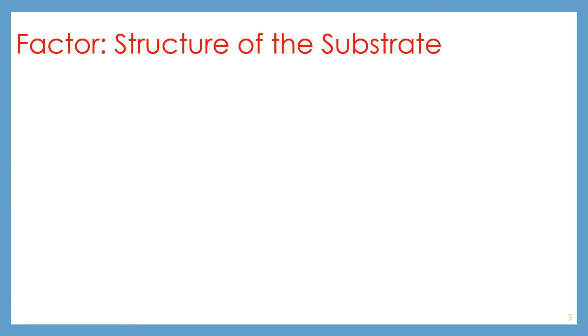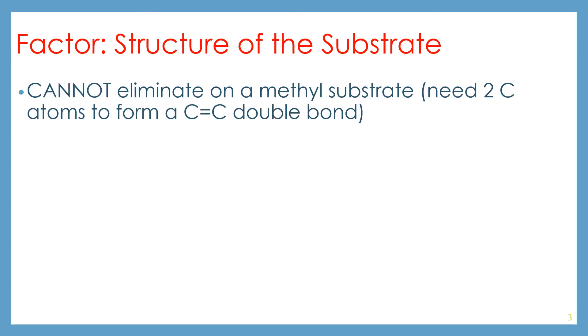So let's take a look at the first factor, structure of the substrate. You cannot eliminate on a methyl substrate. You need to have at least two carbon atoms in order to form a carbon-carbon double bond, and a methyl substrate does not have that.